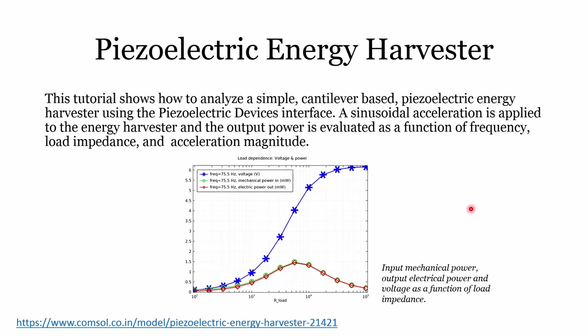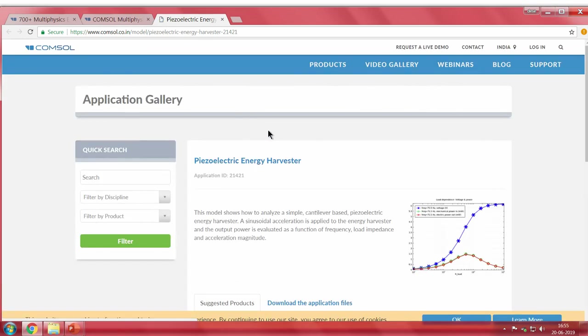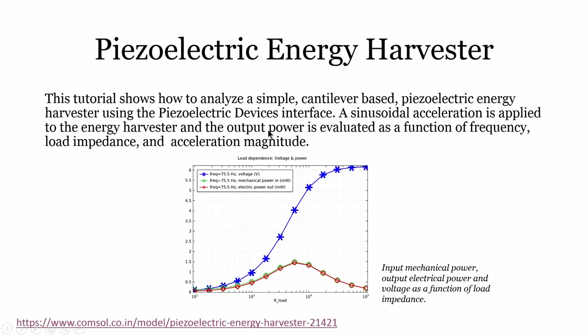Another type of device using piezoelectric material is a sensor — the opposite of the actuator. The input is force creating stress within the material, and the output is voltage in the order of millivolts, microvolts, or a few volts. One example is a piezoelectric energy harvester; all these examples are available via the link at the bottom of the slide.